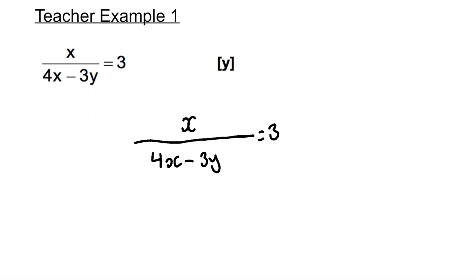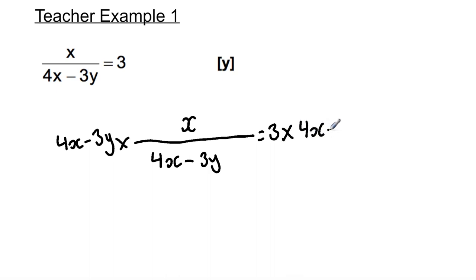I'm going to multiply both sides by 4x minus 3y. This will help me cancel out the denominator, which is 4x minus 3y. So whatever you do to one side, you must do to the other side. This 4x minus 3y will cancel out with the denominator.